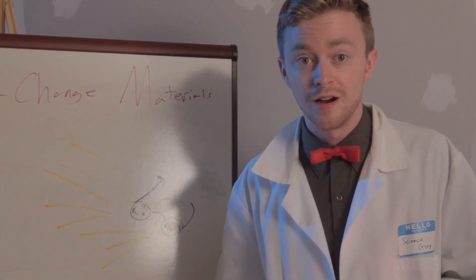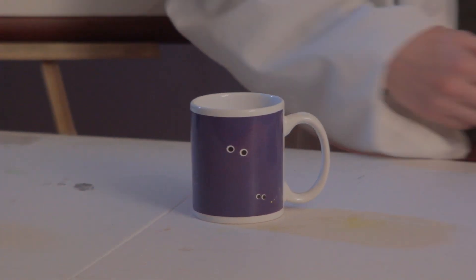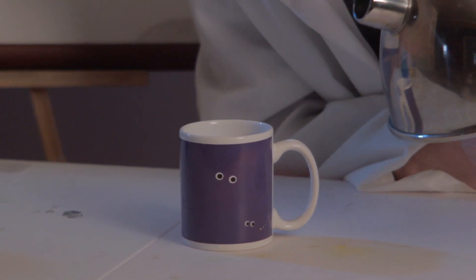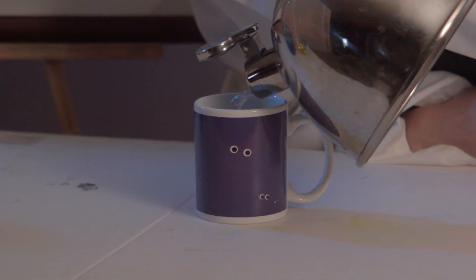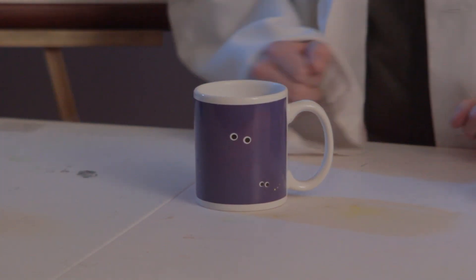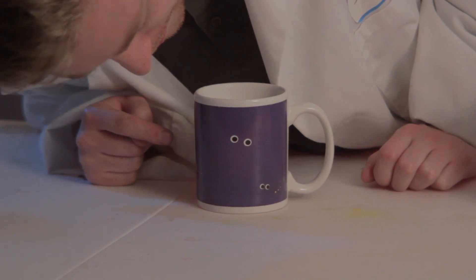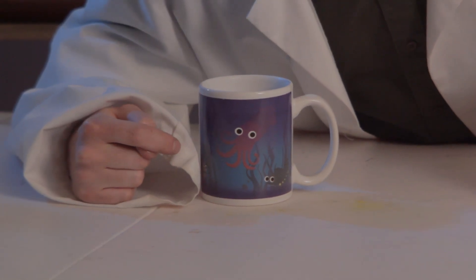But photochromatic materials aren't the only type of color change materials — there's actually another type. Take this mug for instance. The outside of this mug is covered in what's called thermochromatic liquid crystals. When you apply heat to thermochromatic liquid crystals, the crystal structure changes and reflects different light based on that change. In the case of this mug, it reveals some cute little sea creatures.